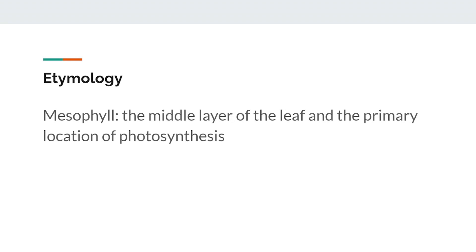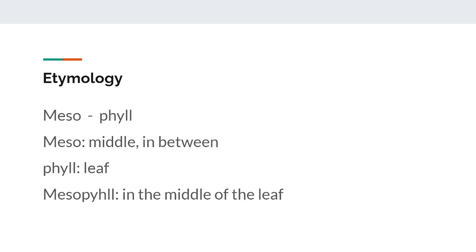However, if we break the word apart into 'meso' and 'phyll', we can deduce much of that for ourselves. The prefix 'meso' means middle or between, and the suffix 'phyll' refers to a leaf. Therefore, we can make an educated guess that mesophyll is the stuff in the middle of a leaf, which turns out to be true — it is in between the upper and lower epidermis of a leaf.